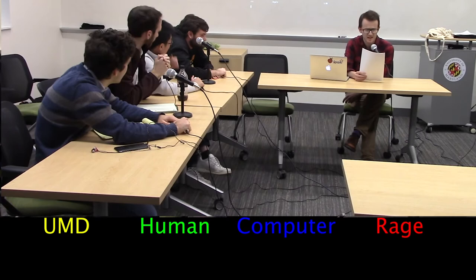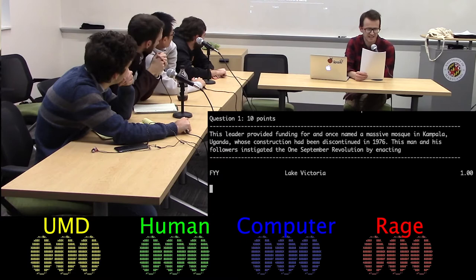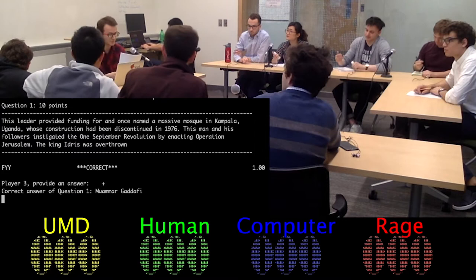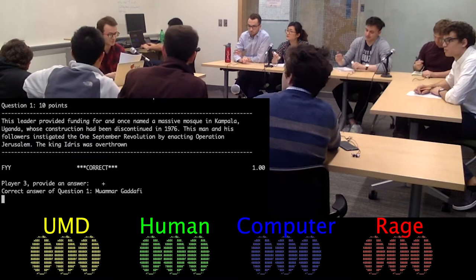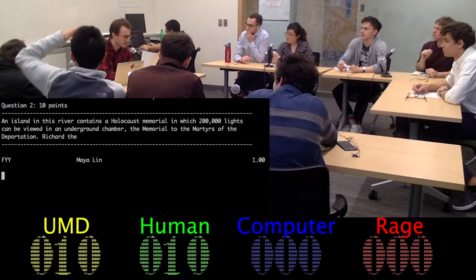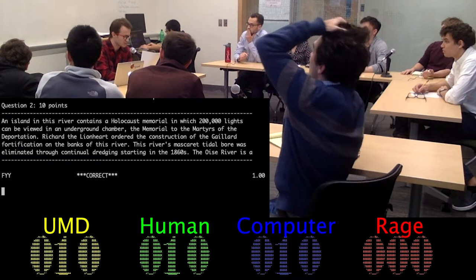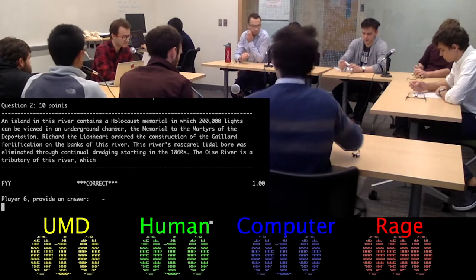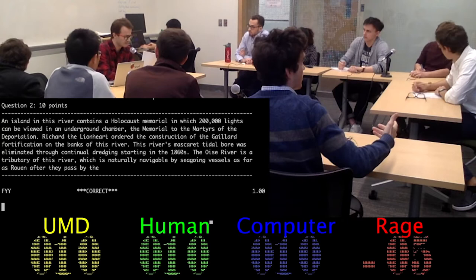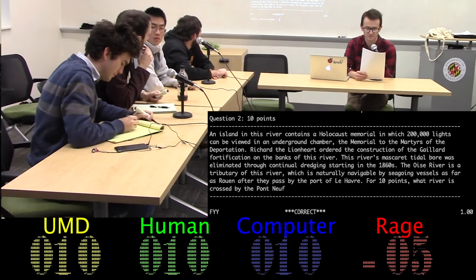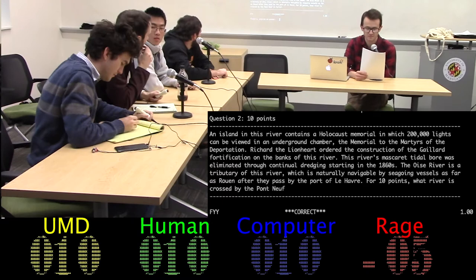Toss-up one. This leader provided funding for, and once named a massive mosque in Kampala, Uganda, whose construction had been discontinued in 1976. This man and his followers instigated the One September Revolution by enacting Operation Jerusalem. The King Idris was overthrown. Gaddafi. Ten points. Toss-up two. An island in this river contains a Holocaust memorial in which 200,000 lights can be viewed in an underground chamber, the memorial to the martyrs of the deportation. Richard the Lionheart ordered the construction of the Gaillard fortification on the banks of this river. This river's masquerade tidal bore was eliminated through continual dredging starting in the 1860s. The Oise River is a tributary of this river, which is naturally navigable by seagoing vessels as far as Rouen after they pass by the port of La Havre. For 10 points, what river is crossed by the Pont Neuf in Paris? Ten points.